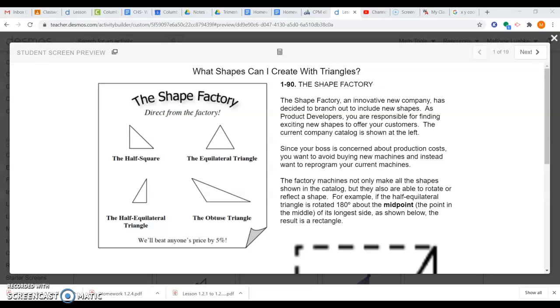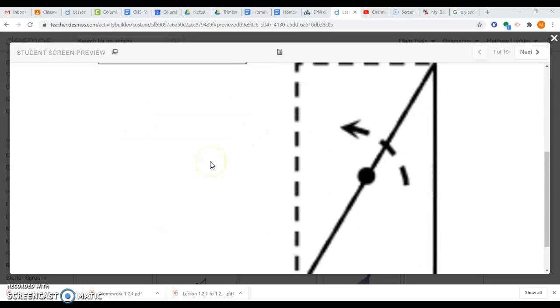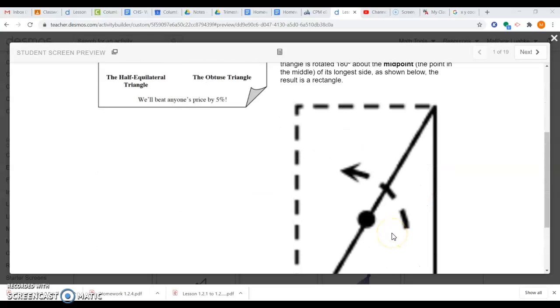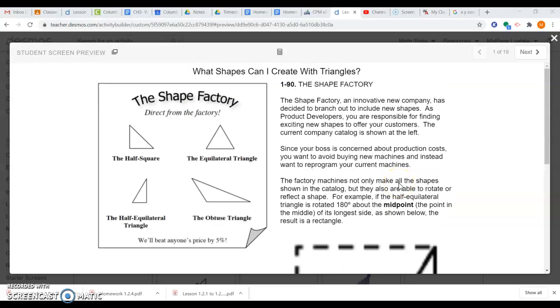Once you click into that Desmos activity, it should bring you here. Now, the point of this lesson is it's called the Shape Factory because we are going to work with these four shapes in the Shape Factory, and we're going to rotate them about midpoints like you see in this picture. We're going to rotate it about that midpoint, or we're going to reflect it along its longest side or one of the sides to try to create as many new shapes as possible.